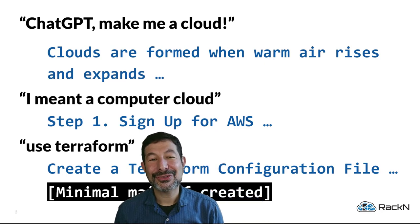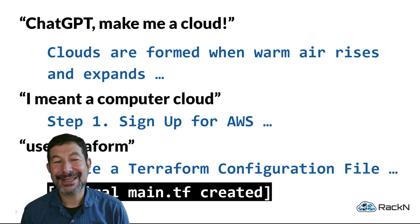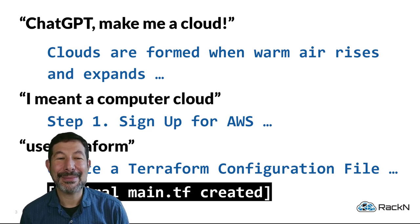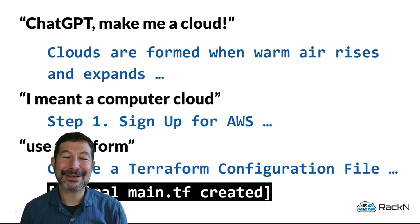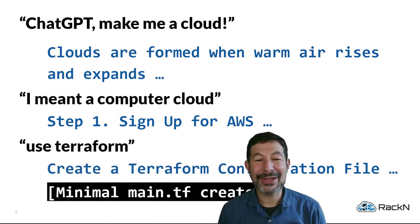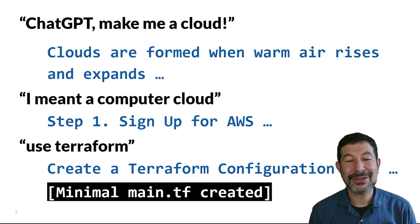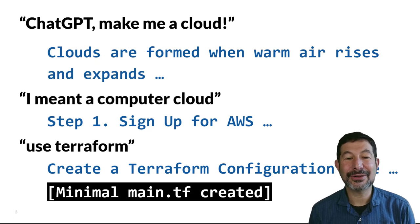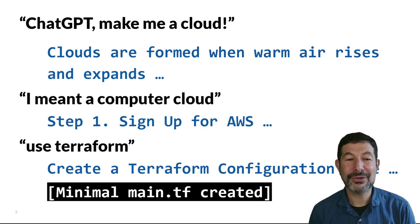If I just start with the most basic and say 'ChatGPT, make me a cloud,' one of the first things you'll notice is it doesn't even understand what I mean in context of cloud. It's going to tell me about actual clouds — Warm Air Rises — and it offers an experiment on creating clouds in a bottle. If I clarify that I meant a computer cloud, it guides me through the most basic sign-up for AWS. And if I say I actually want to use Terraform, it will create, without any further prompting, a Terraform file. This is pretty normal interaction for what you'd see with ChatGPT.